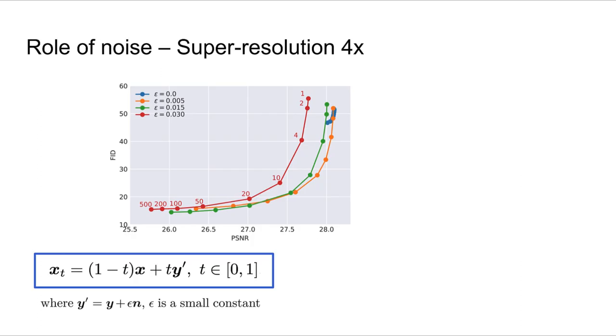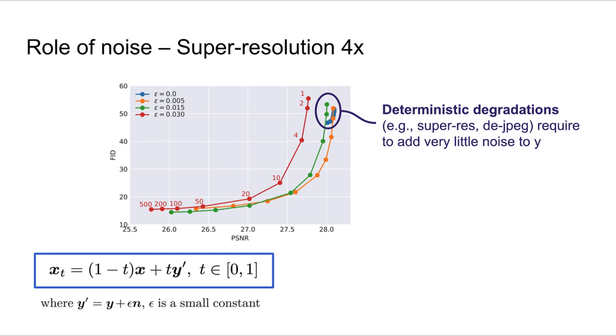Let's see an example for super-resolution and the role of noise. Here you can see the same distortion perception plot as we showed before. Each of the dots represent the results of applying INDI with a different number of steps in the reconstruction. If we train a model without adding noise, here represented in the blue curve, then no matter how many steps we do in the reconstruction, we get similar results as the one we get when doing a single step reconstruction.